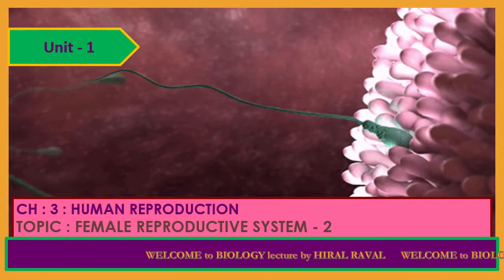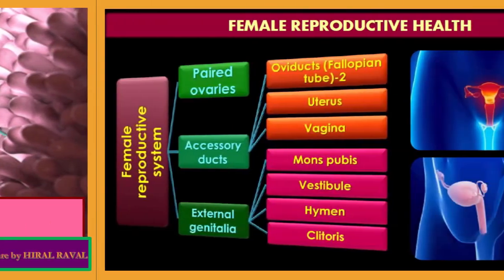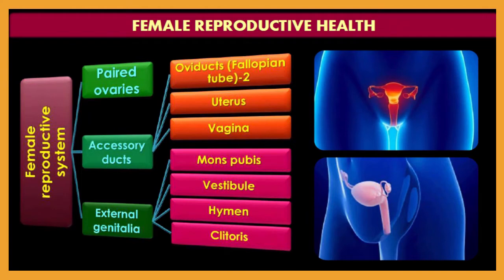Hello students, today we are going to discuss about the female reproductive system. In the previous lecture we discussed about paired ovaries, accessory ducts including the oviduct, fallopian tube, uterus, and vagina. In today's lecture we are going to discuss about external genitalia, including mons pubis, vestibule, hymen, and clitoris.